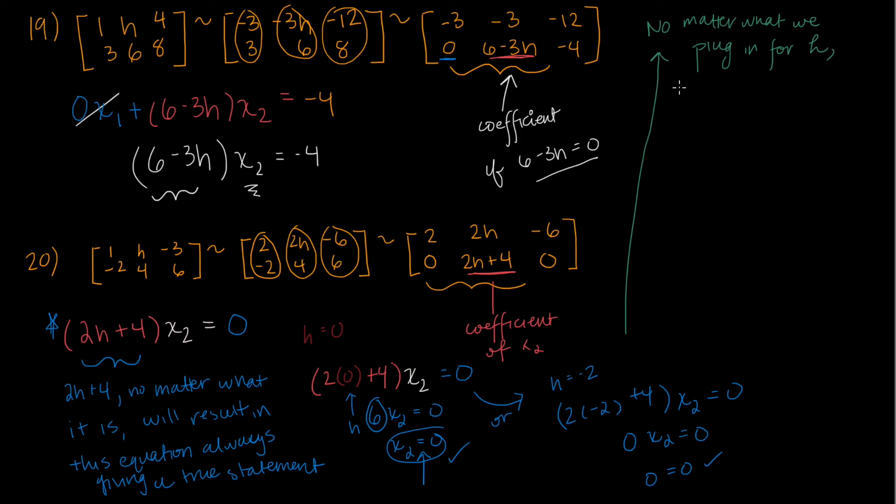So no matter what we plug in for a value of h, doesn't matter what it is, the system is consistent. And this makes sense. The reason for this is that no matter what you put here, something can always equal zero. x2 will be the thing that equals zero. And what this means is that h is any real number.